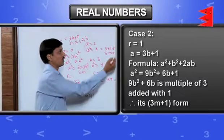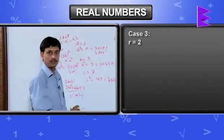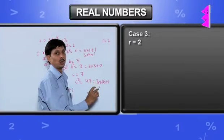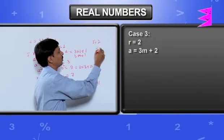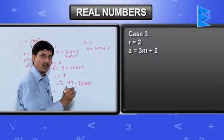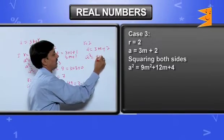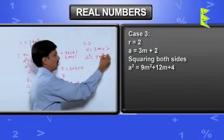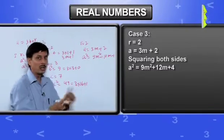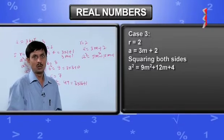Now, I am going to take case 3. Case 3 is r equals 2. To take r equals 2, a equals 3m plus 2. If we find its square, it is coming out to be 9m square plus 12m plus 4. Again, using the same identity, a plus b whole square equals a square plus b square plus 2ab.